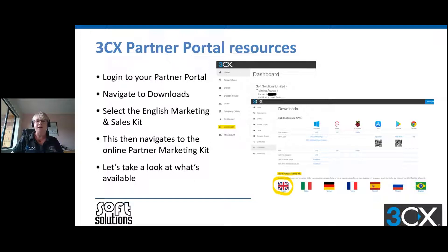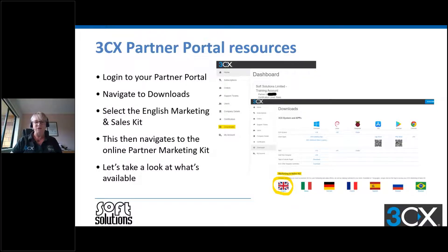A lot of people don't realize that the marketing kit from 3CX hides away in your partner portal, and the partner portal was updated towards the end of last year. You can still get back to the old version but the new version is much more user-friendly. To access your resources you log into your partner portal, navigate to the downloads section, and select the English marketing kit. It now takes you to an online partner marketing kit rather than downloading a massive zip file.